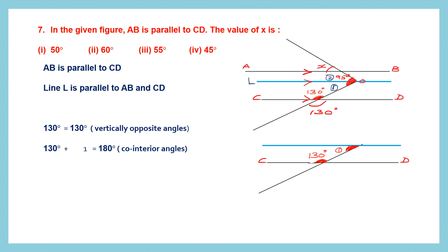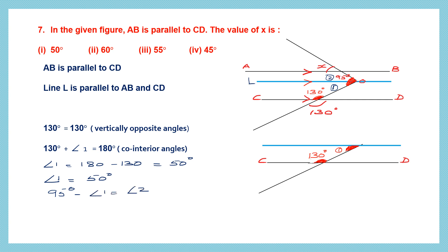So angle 1 equals 180 minus 130, which is 50 degrees. We have found angle 1 is 50 degrees. Now we can find angle 2 by subtracting from 95: angle 2 equals 95 minus angle 1 (which is 50), giving angle 2 equals 45 degrees. So this side is 45 degrees and the other side is 50 degrees — and together they add up to 95 degrees.